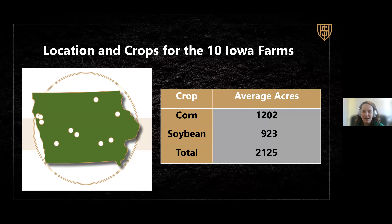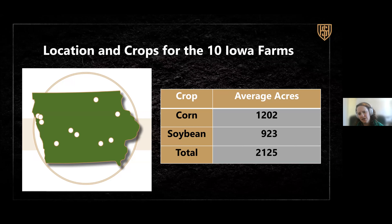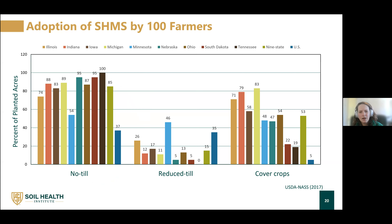Just to give an Iowa-specific overview: ten farms were included, well distributed across the state, representing our different soil and climatic conditions here in Iowa. On average, these Iowa farms had slightly more corn acres and just over 1,200 average crop acres farmed with these management practices, and just under 1,000 for soybeans. The average size of these operations was above the national average, indicating that we can implement some of these different practices at scale.